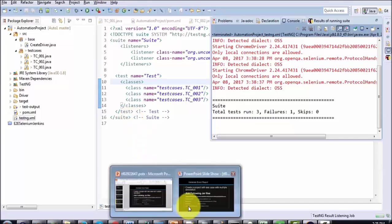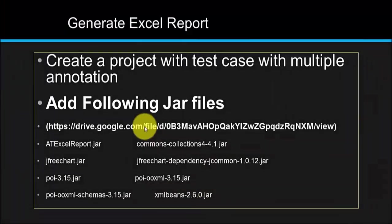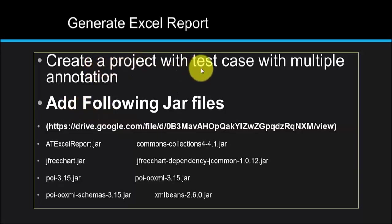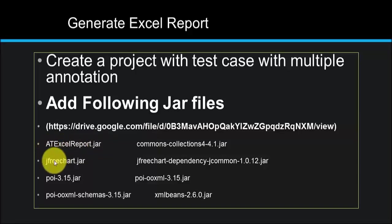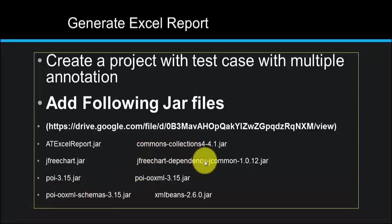We need to add the following JAR files to the project. We need: atExcelReport, jFreeChart, POI, POI-OOXML, Commons Collections, jFreeChart dependency — a total of 8 JAR files required. You can download all these JAR files by searching on Google, or use the provided Google Drive path to download them.